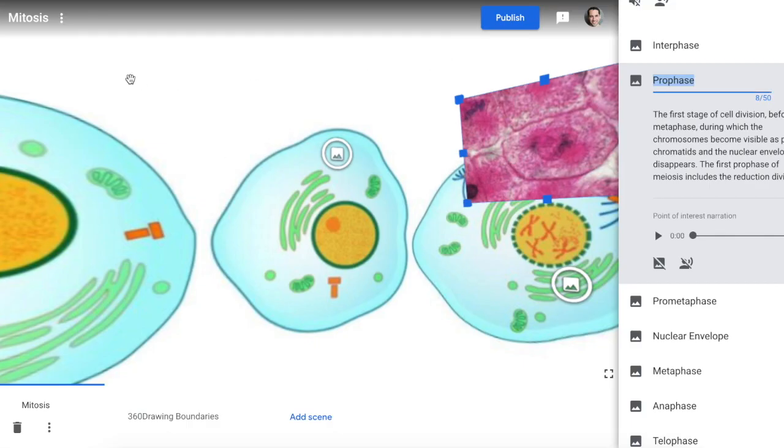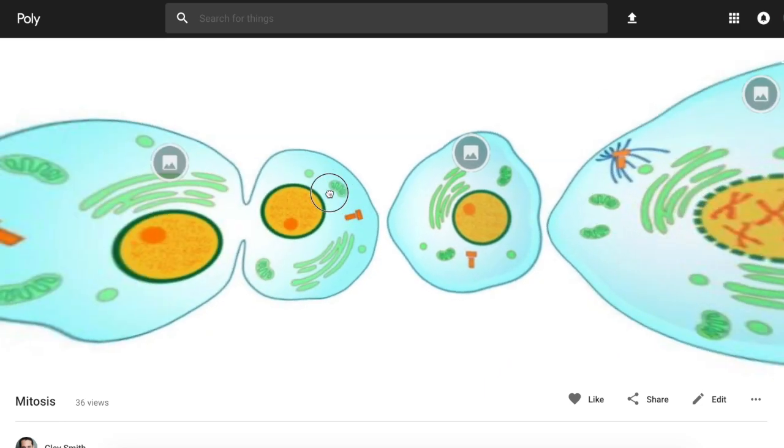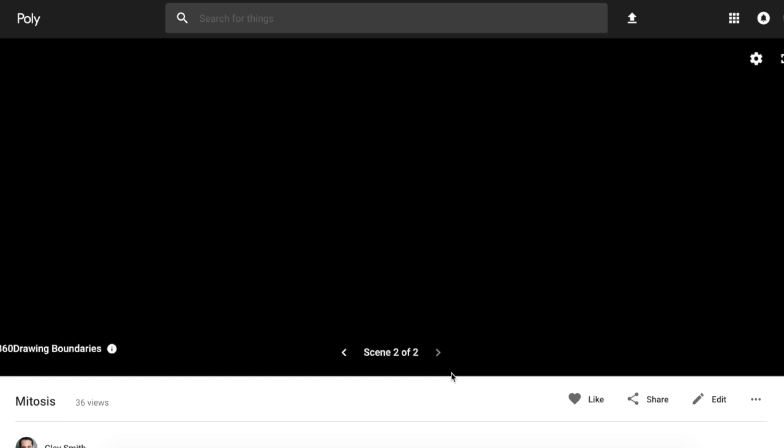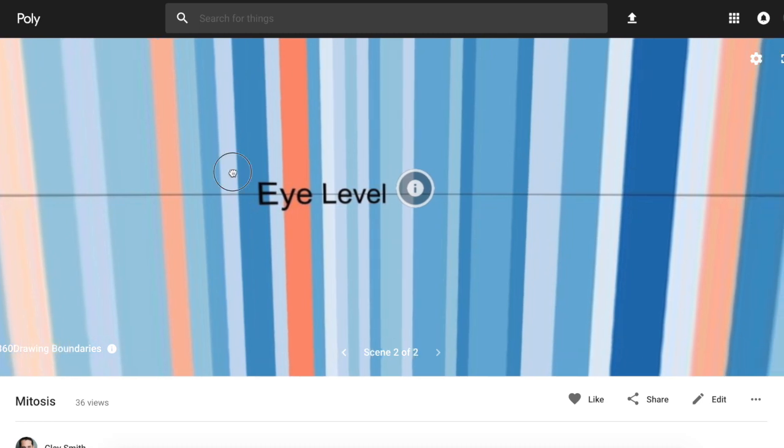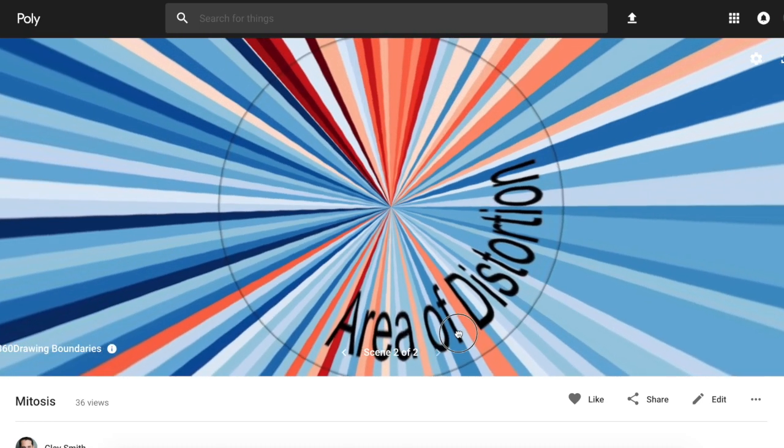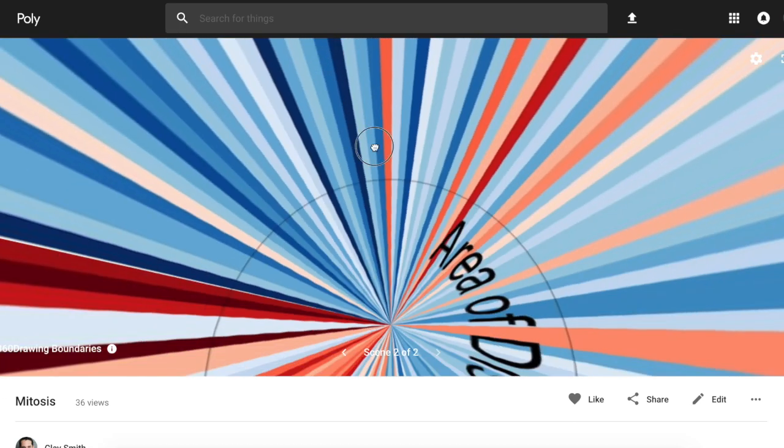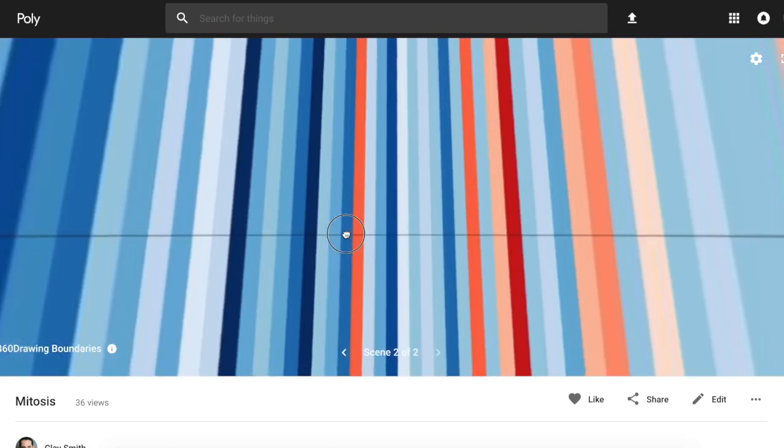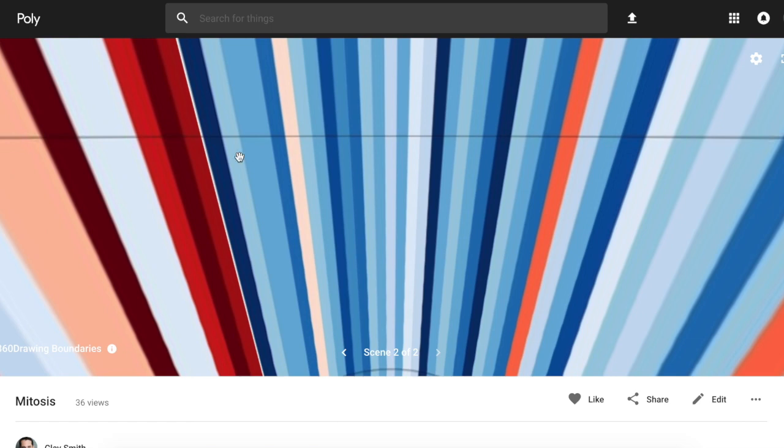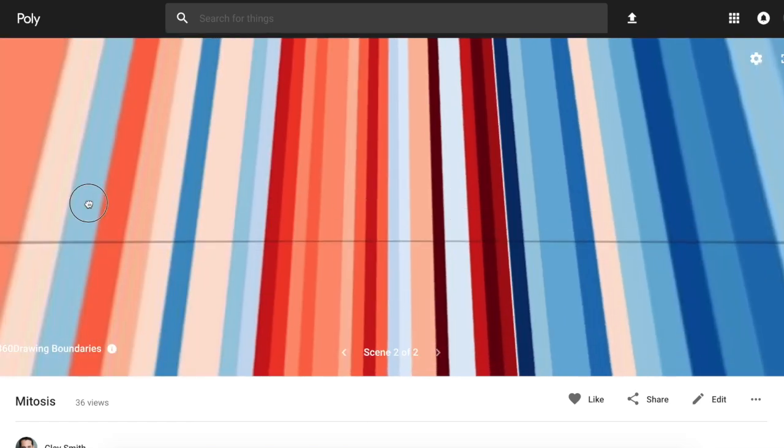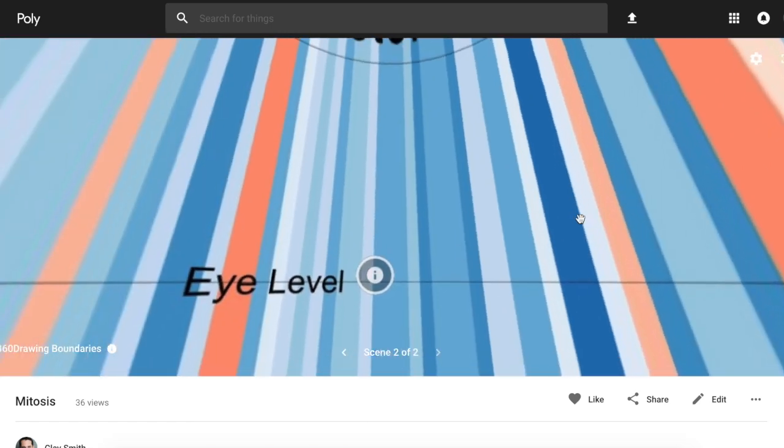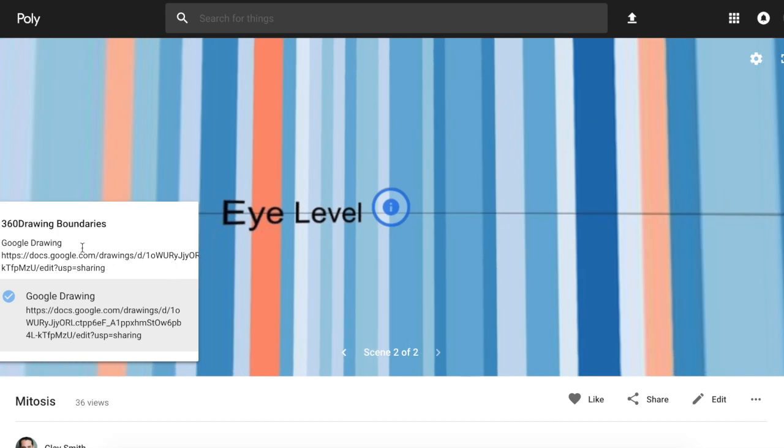Here is a tour, and I'm just going to pull up the published tour here. When we look around within here, it actually is a drawing. Here is our 360. We can see the area of distortion towards the top and towards the bottom, and yet we have this great area that's about eye level that we can take advantage of to put things in there.